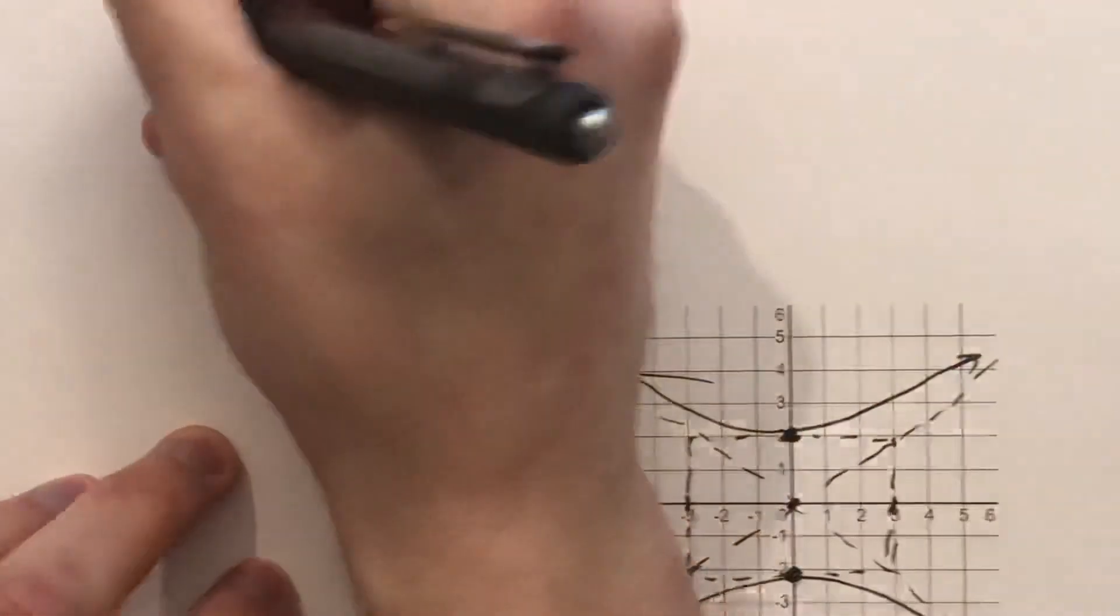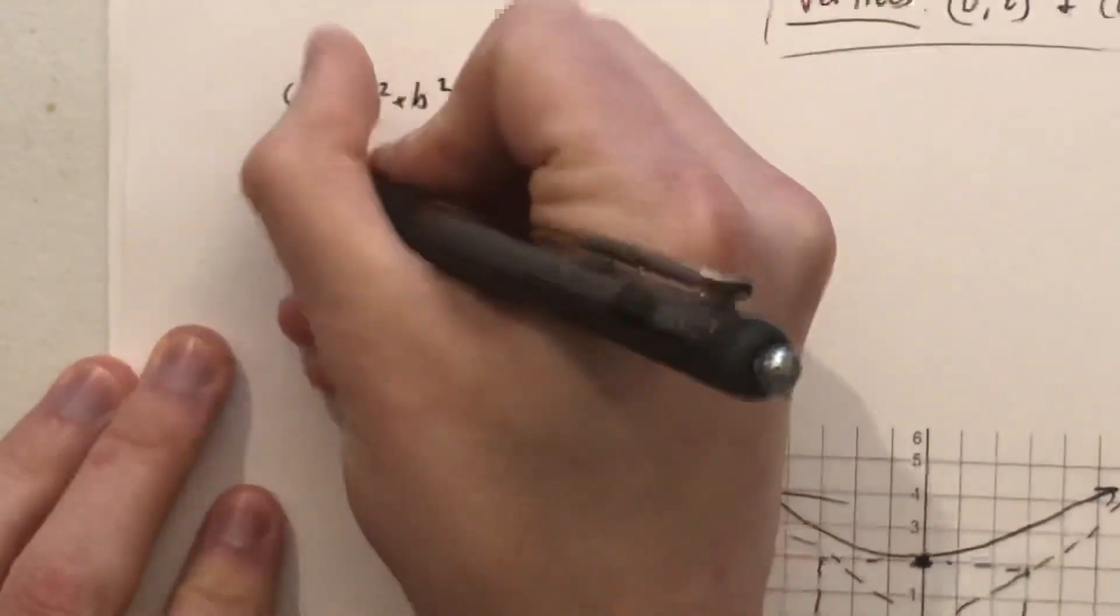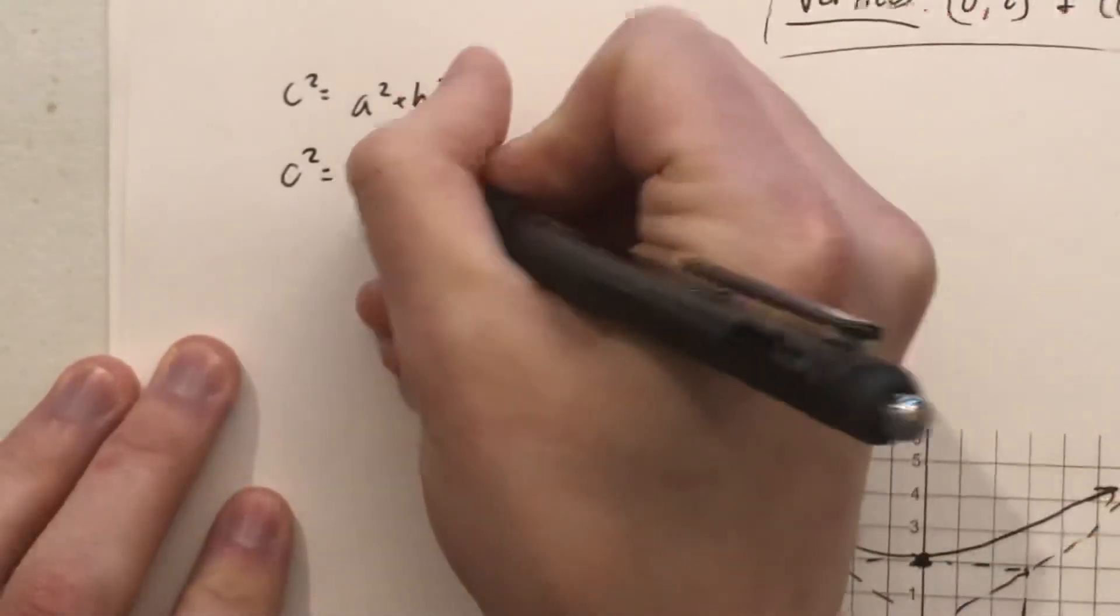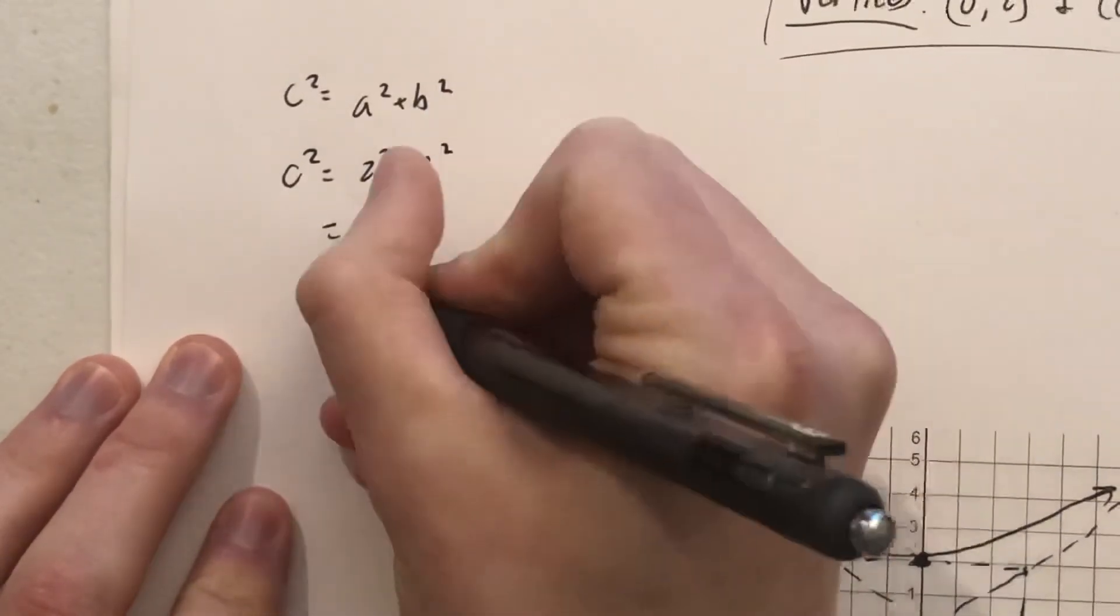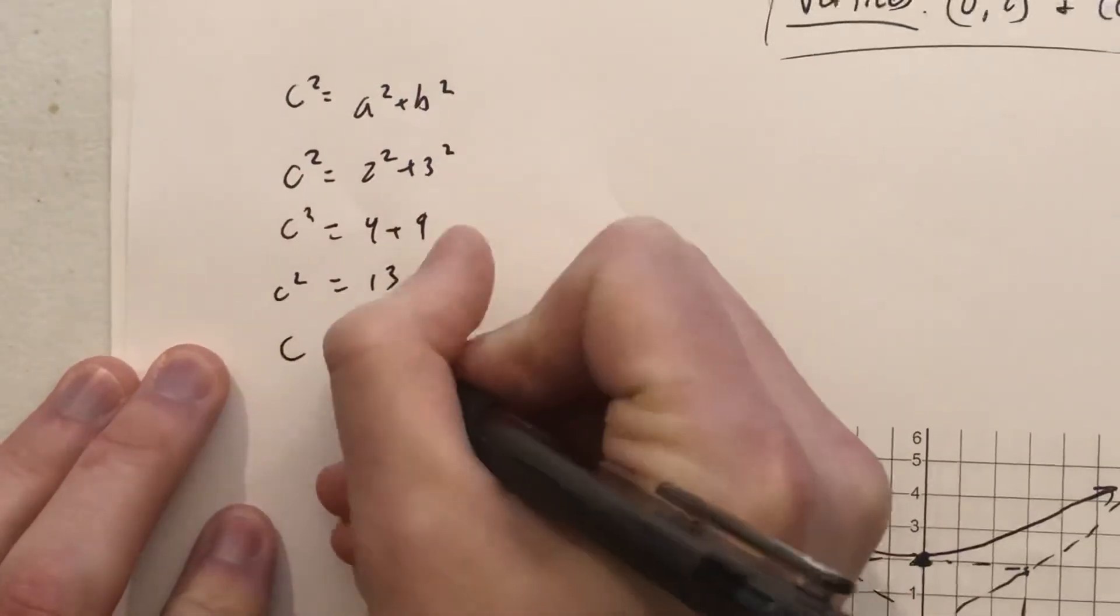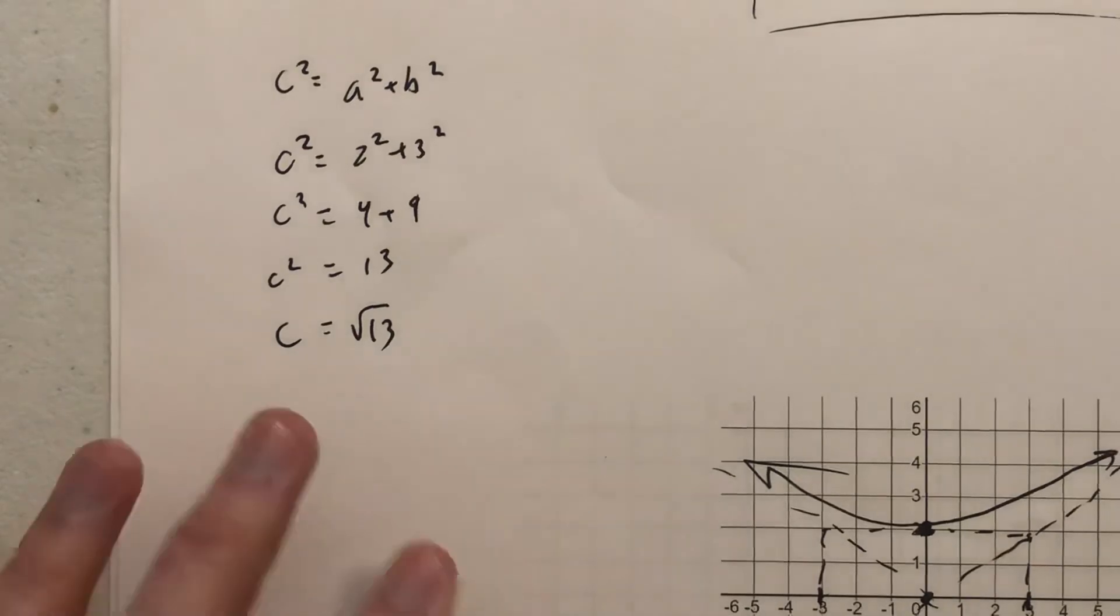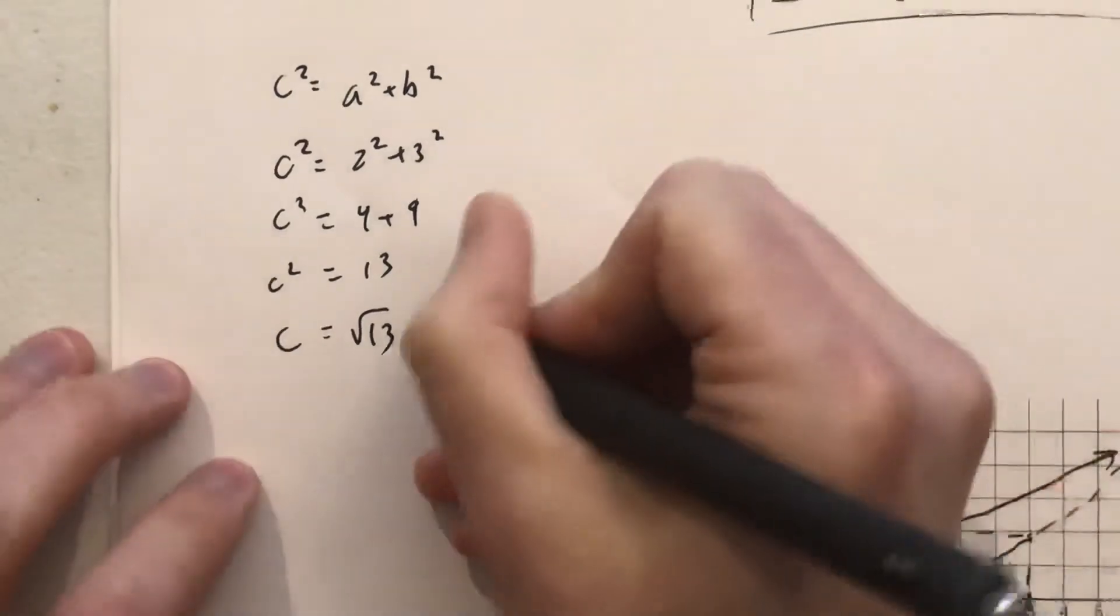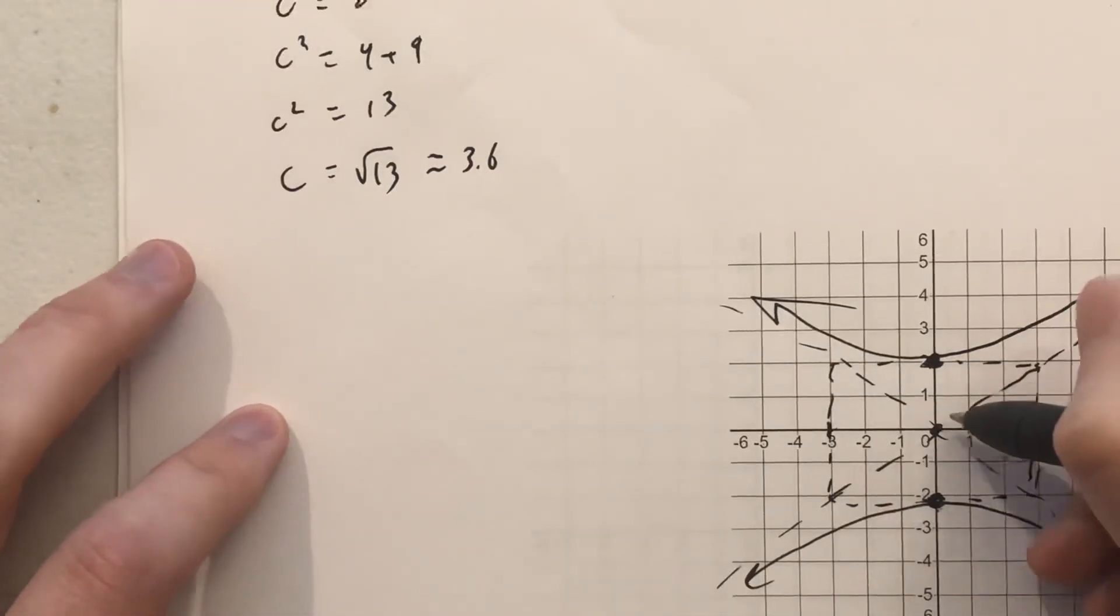And now to find the foci, we again use our formula, our foci formula. And so c squared equals 2 squared plus 3 squared. So 4 plus 9, so 13. So c equals the square root of 13, which again does not simplify. We can approximate it as 3.6.